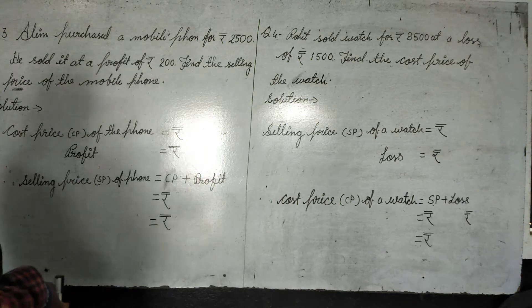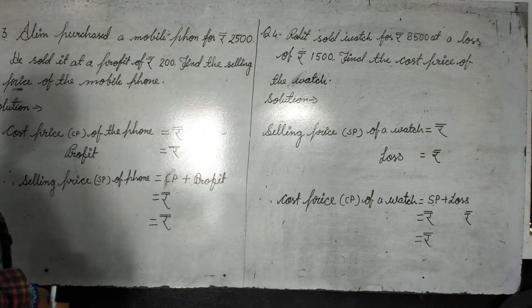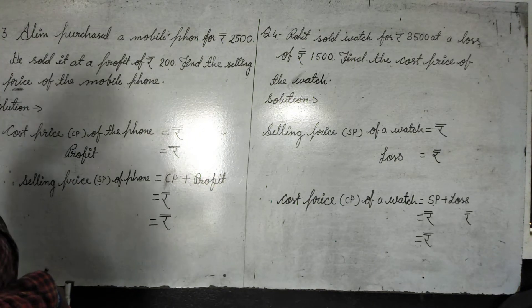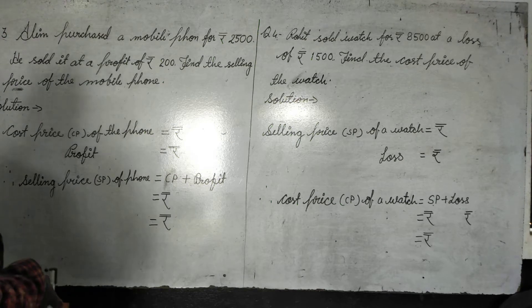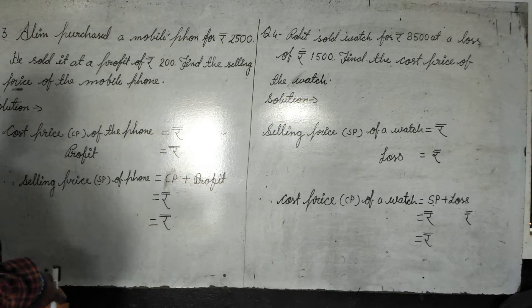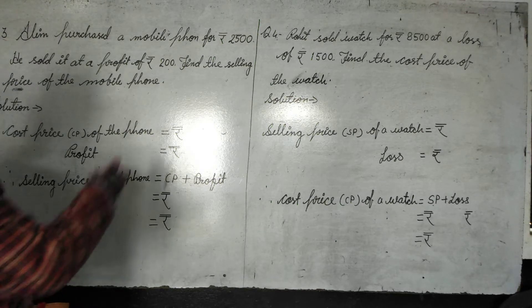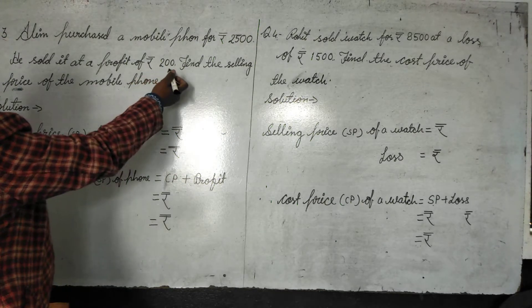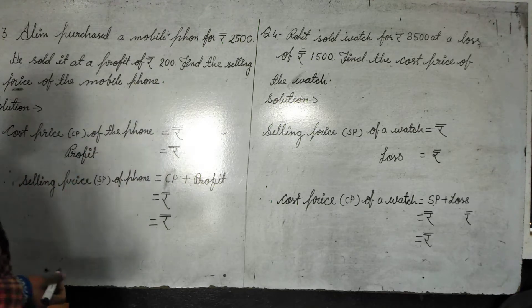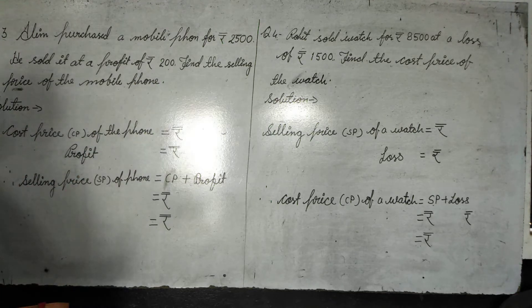Question: Ali purchased a mobile phone for rupees 2500. He sold it at a profit of rupees 200. Find the selling price of the mobile phone.